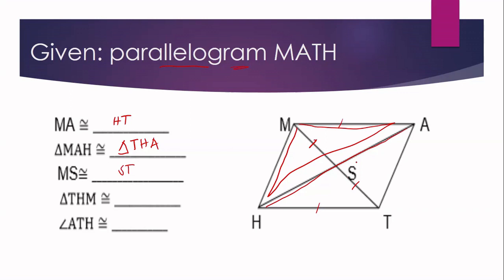Number four: triangle THM is congruent to triangle MAT. Our diagonal MT divides quadrilateral MATH into two congruent triangles: triangle THM and triangle MAT.